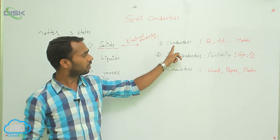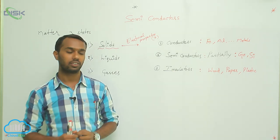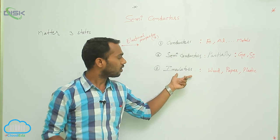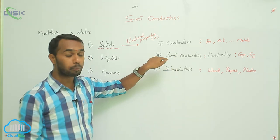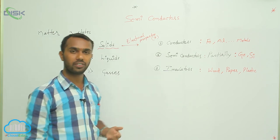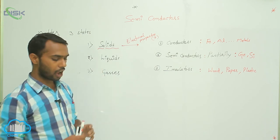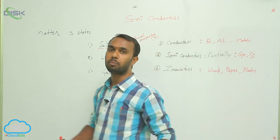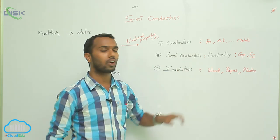Every solid — conductors, semiconductors, insulators — all have atoms, and every atom consists of electrons. Then why do we get this difference? Why does one accept current, another not accept, and another partially accept? To understand that, we have to know about band theory. Band theory explains why some solids are conductors, some are semiconductors, and some are insulators.